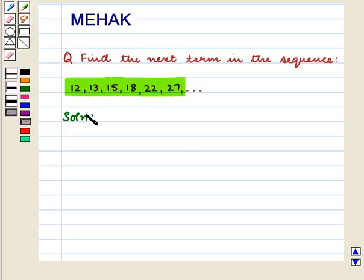Let us discuss the solution. We are given a sequence of numbers 12, 13, 15, 18, 22, 27 and so on. And we have to find the next number of this sequence.